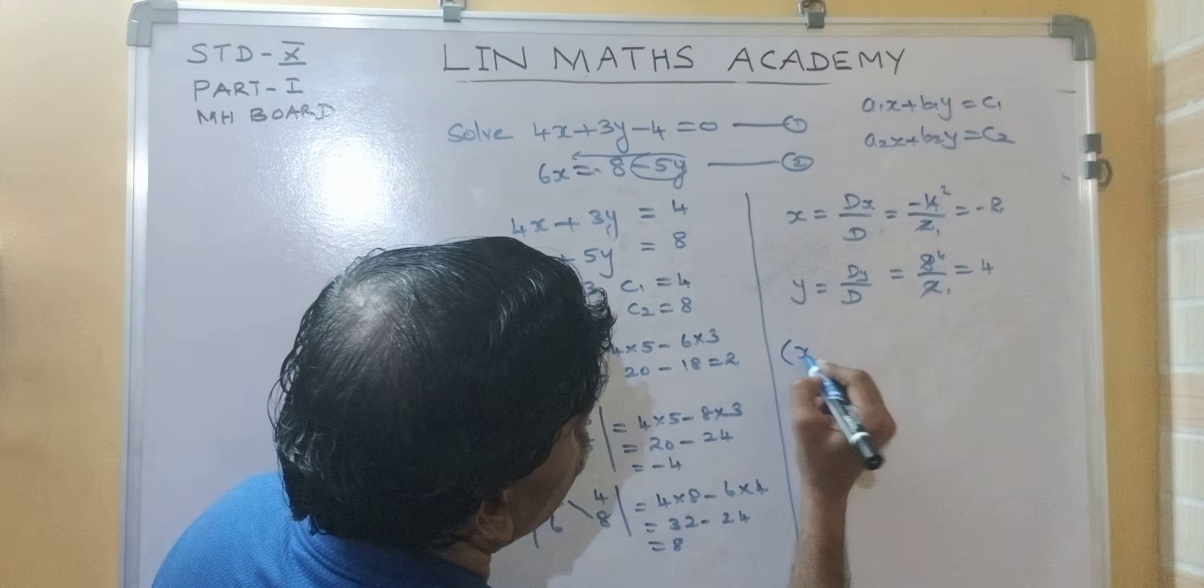So, we need not worry about this. Now, so, what is a1? 4. What is b1? 6. What is c1? 54. What is a2? 3. What is b2? 2. What is c2? 28.